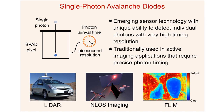Single photon avalanche diodes, or SPADs, are an emerging image sensor technology that can detect individual photons with very high time resolution on the order of tenths of picoseconds. These sensors are currently being used in specialized active imaging applications such as LiDAR, non-line-of-sight imaging, and fluorescence microscopy. In this research we demonstrate that SPADs can also be used for passive imaging to capture 2D intensity images of a scene just like a regular camera.